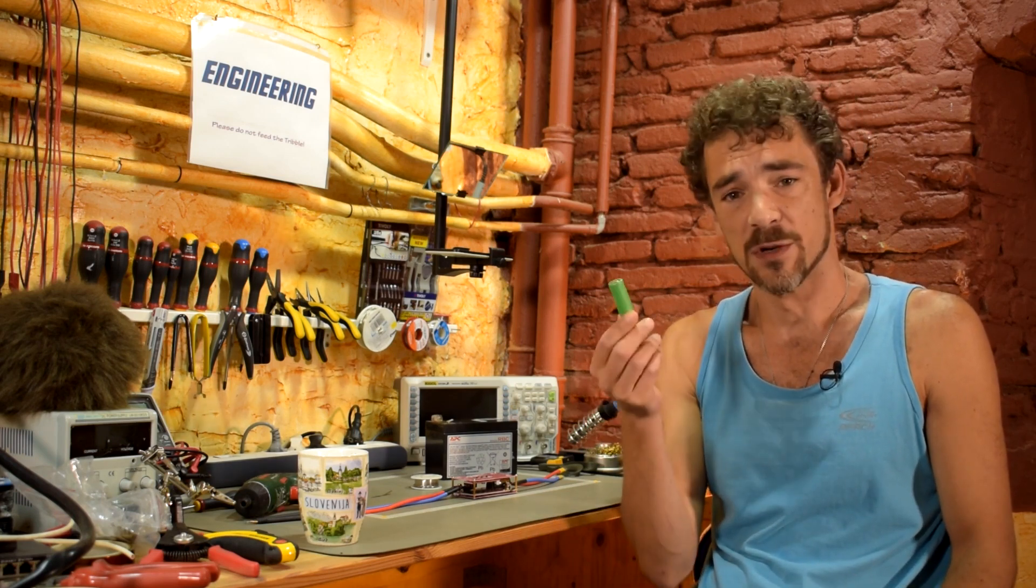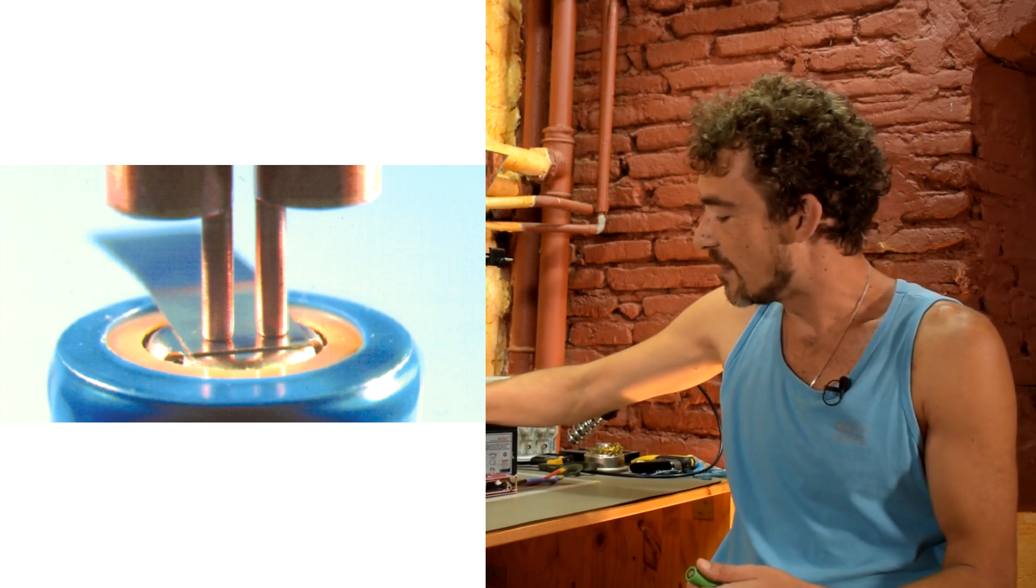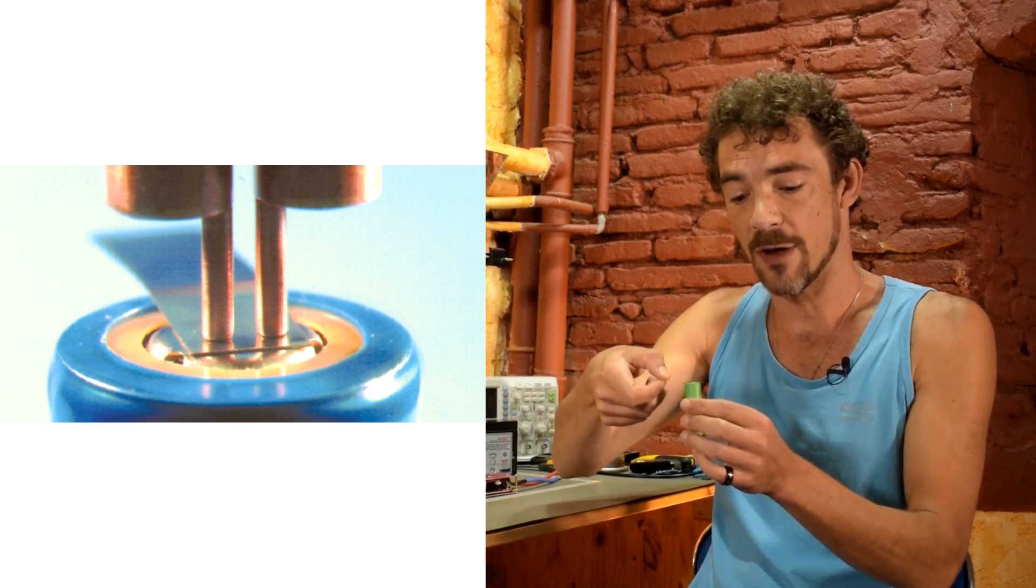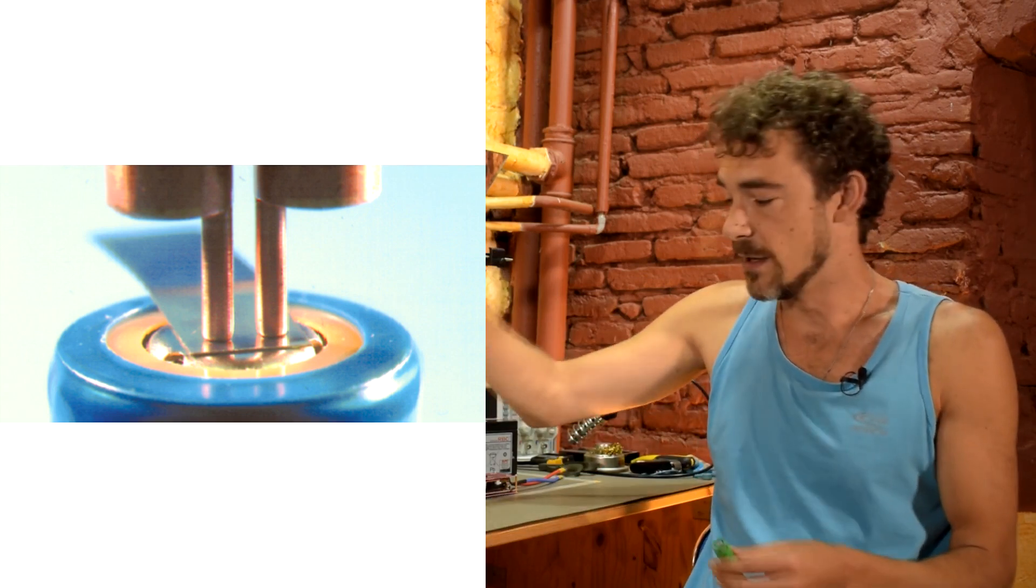Normally, when you want to attach a bunch of these cells together to create a big battery pack, you do tab welding. Tab welding looks something like this: you take a strip of metal such as this one, which is usually nickel-plated steel, and you place it on top of the battery.